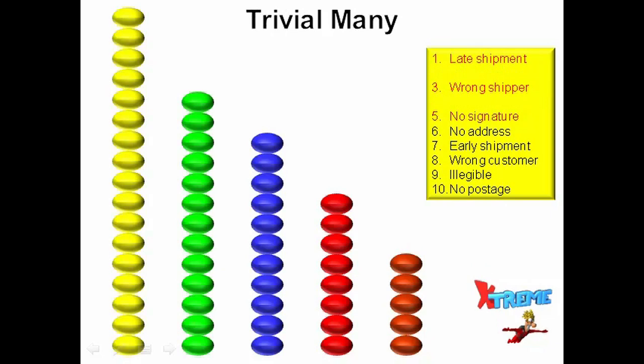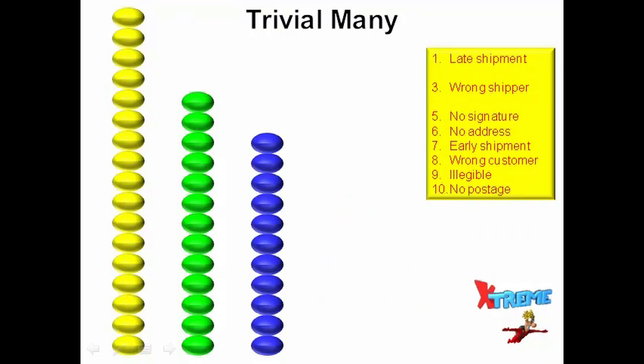That means 80% of the causes of your problems are trivial and will not yield the same benefits as eliminating the vital few. In this example, we could spend a lot of time eliminating 8 of the 10 causes and only eliminate 20% of our problems as shown. That is a lot of work for such a minor improvement.